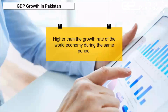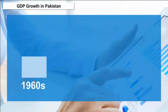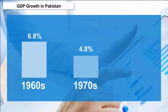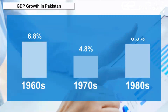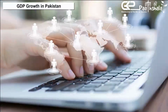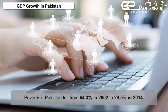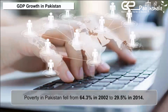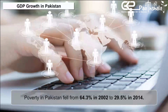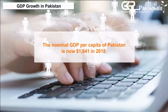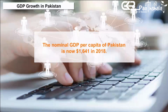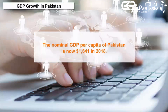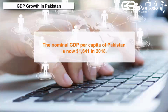GDP Growth in Pakistan. Average annual growth rates of GDP were 6.8% during the 1960s, 4.8% in the 1970s, and 6.5% in the 1980s. Recently, according to World Bank data, poverty in Pakistan fell from 64.3% in 2002 to 29.5% in 2014. The nominal GDP per capita of Pakistan is now $1,641 in 2018.